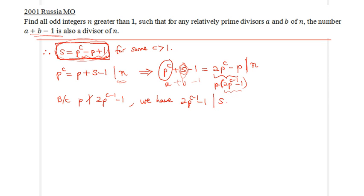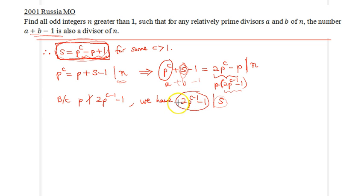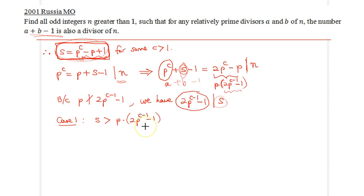Now we have two options. Either s is strictly greater than p times (2p^(c-1) minus 1) — Case 1 — or s is exactly equal to 2p^(c-1) minus 1 — Case 2.